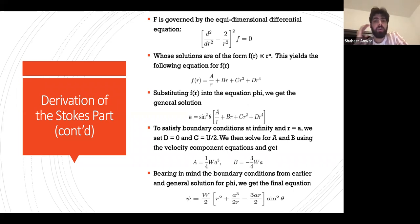To satisfy boundary conditions at infinity and r = a, we set D = 0 and C = u/2. We then solve for a and b using the velocity component equations, and we get a = (1/4)*w*a³ and b = -(3/4)*w*a.